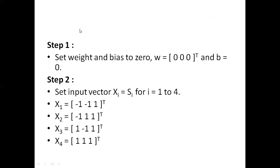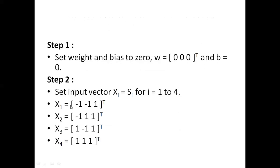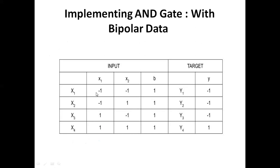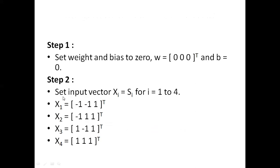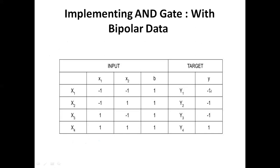Step one: set weights and bias to zero — w = [0, 0, 0]^T and b = 0. In step two, set input vectors x_i to s_i for i equal to one to four, since we have four rows. So x1 = [-1, -1, 1], x2 = [-1, 1, 1], x3 = [1, -1, 1], and x4 = [1, 1, 1]. In step three, the output value is set to y = t, meaning y will have values [-1, -1, -1, 1] corresponding to each input vector.